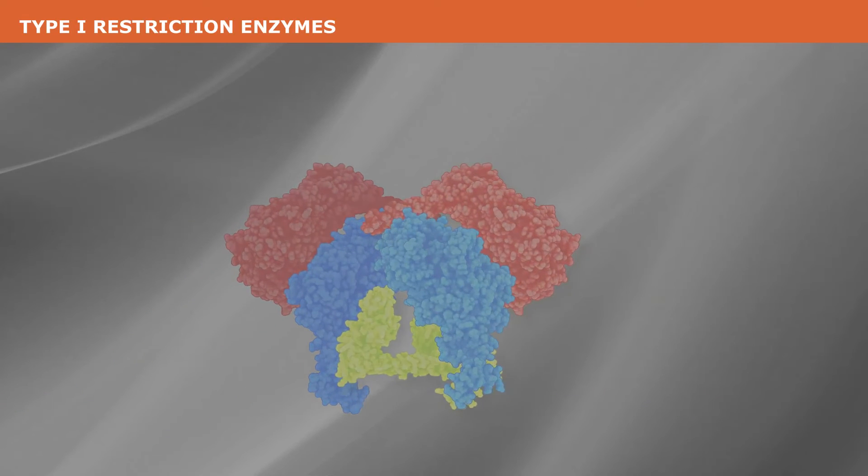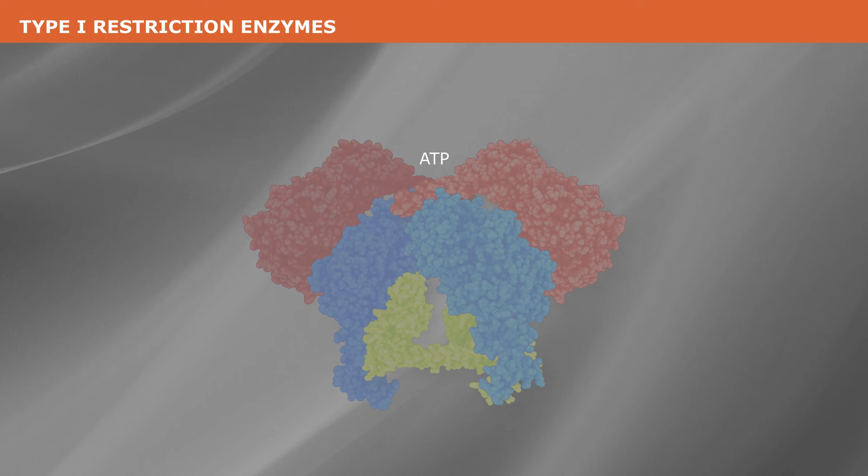In addition to the requirement for ATP, type one restriction systems also require S-adenosyl methionine and magnesium ions.